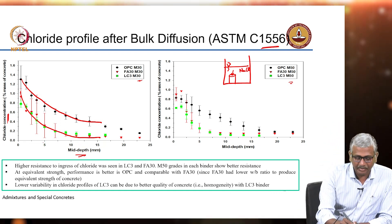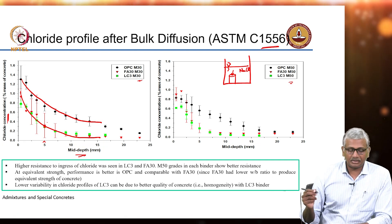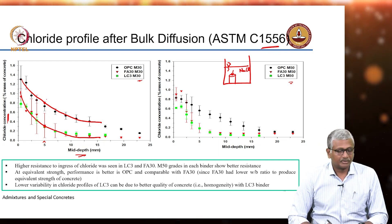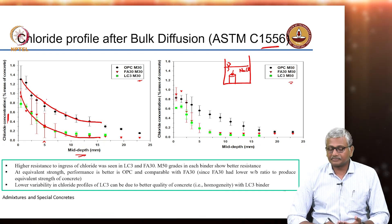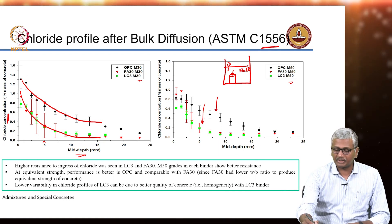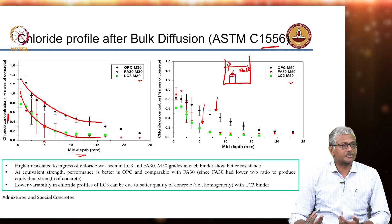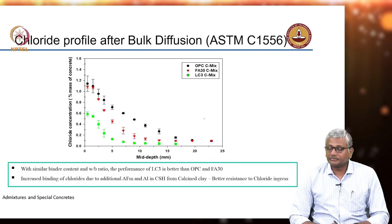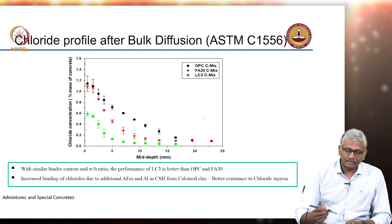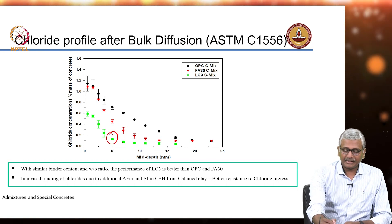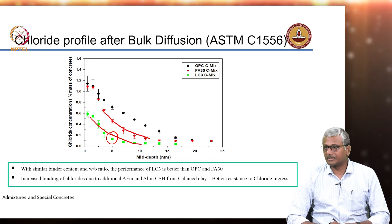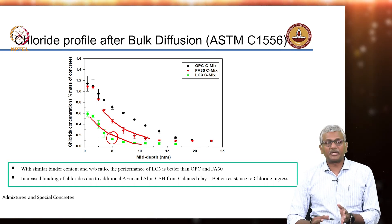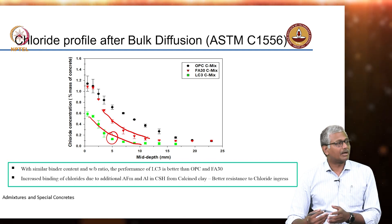The chloride profiles are 'better' because at a given depth — say 5 mm — the chloride concentration in fly ash or LC3 concrete is much lower than in Portland cement based mixes. As the grade of concrete increases, the profiles come further down, meaning the concrete becomes less permeable due to a lower water-to-cement ratio. In the case of a common mix with the same water-binder ratio and binder content, LC3 performs even better than fly ash, and the benefits of calcined clay in chloride diffusion are clearly observed.